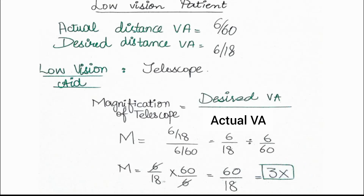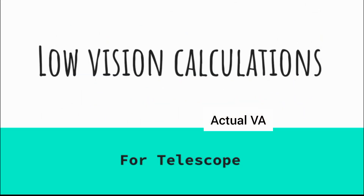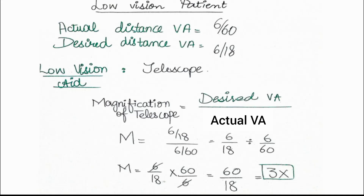This means that for a patient with an actual distance real acuity of 6/60 who wishes to read the 6/18 line, a 3x magnification telescope is required. I have discussed the training steps of the telescope and its types — including the handheld telescope — in another video; the link will be in the description. So the magnification of the telescope for this case is 3x.